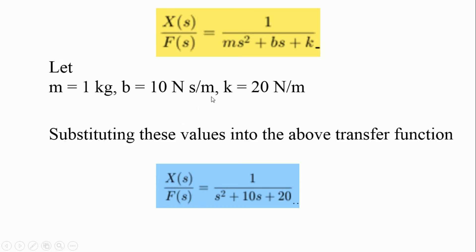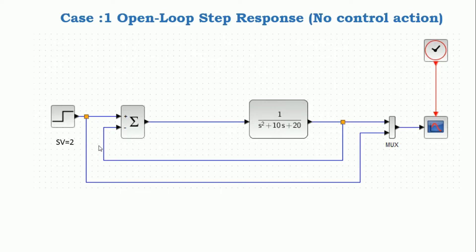The goal of this problem is to show how each of term that is kp, ki and kd contributes to obtain the common goal of that is fast rise time, minimal overshoot and zero steady state error. Now, consider the first case that is open loop step response that is no control action with the help of PID controller.